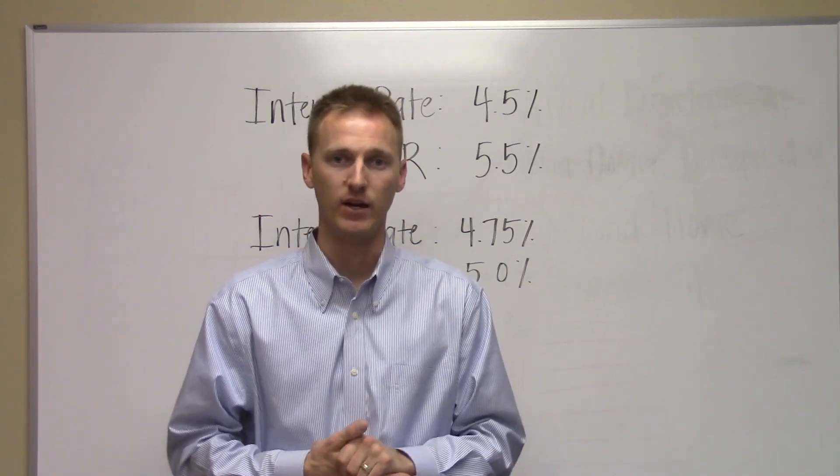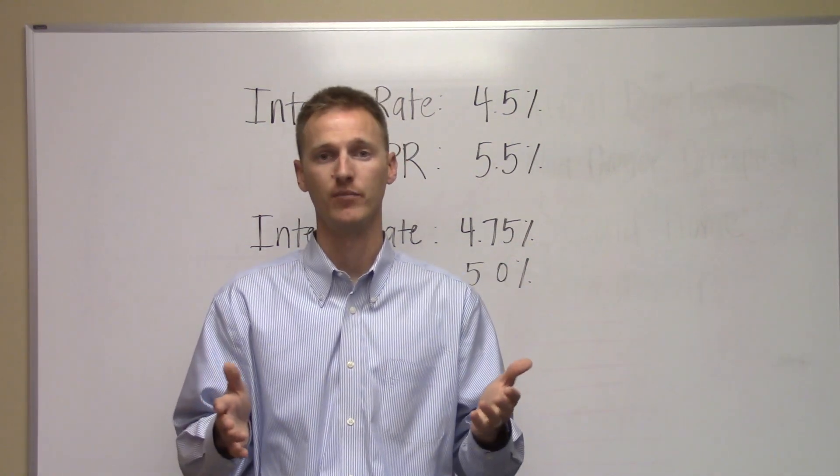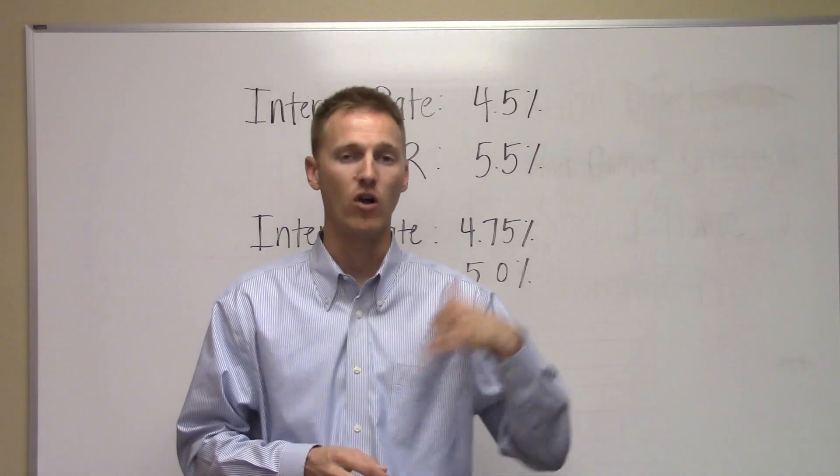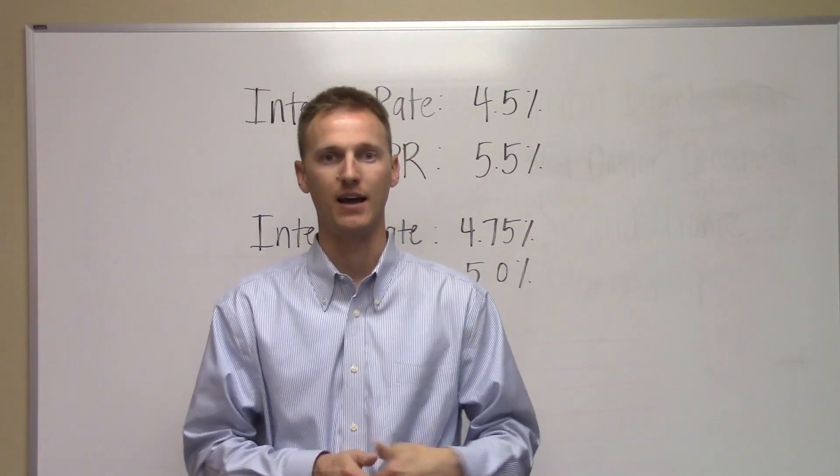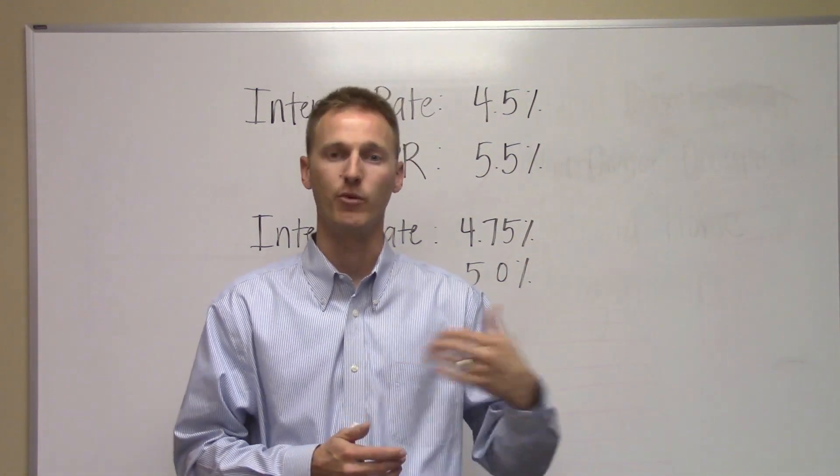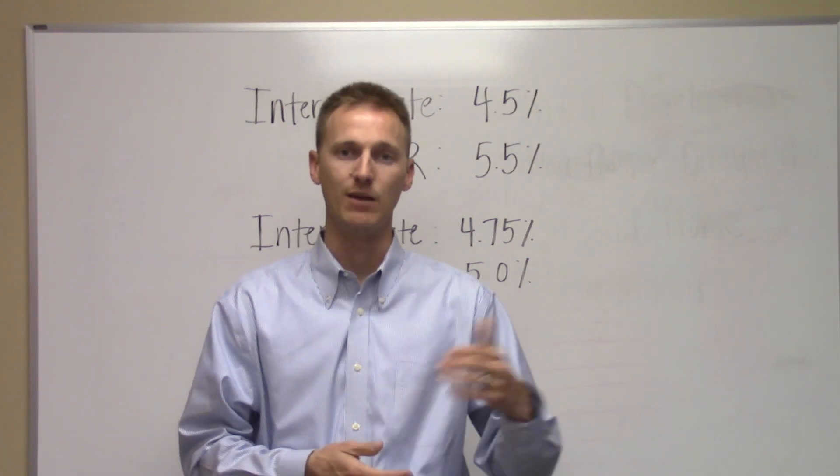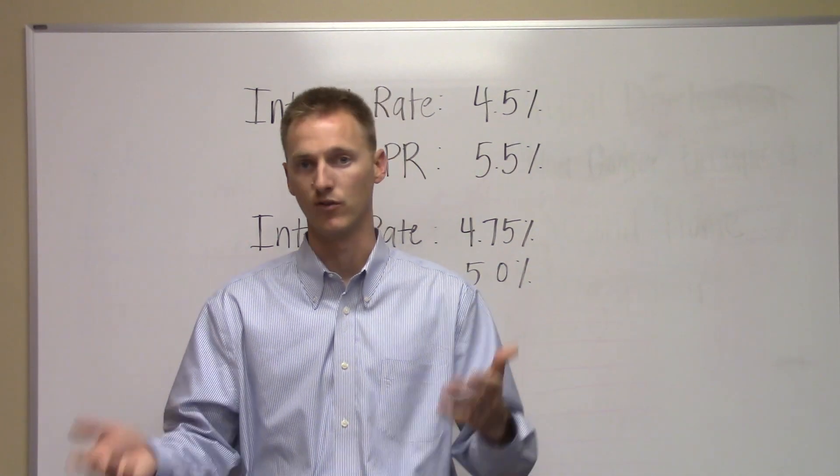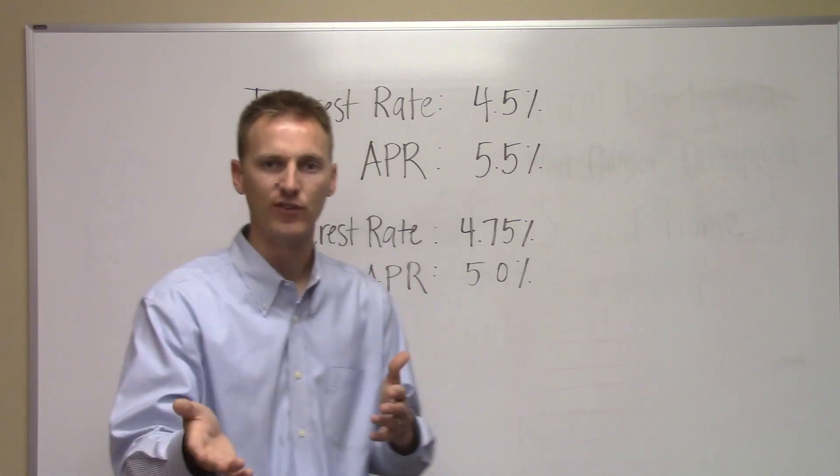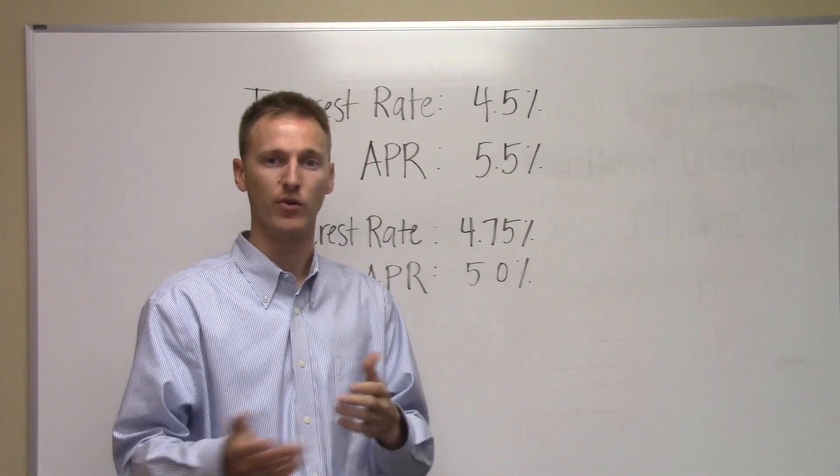Call them and tell them you want a good faith estimate so you can see your APR. Once you get it from one lender, call lender B and say you're shopping for loans and want to make sure you're getting the best deal. Ask them to send a good faith estimate so you can see the APR, interest rate, and terms. Let's talk about scenarios where this comes into play that you might experience.